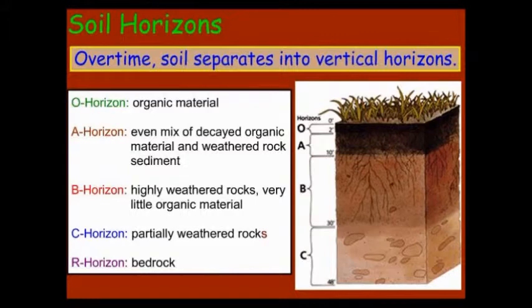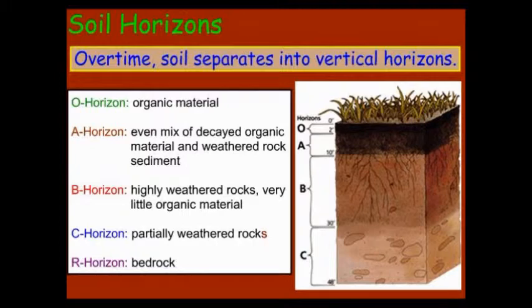Over time, soil can separate into layered horizons. The O-horizon is made up of organic material. The A-horizon is a mix of organic material and also some weathered rock sediment. The B-horizon is highly weathered rocks with much less organic material at this depth. The C-horizon is partially weathered rocks with almost no organic material, and the R-horizon is the bedrock.